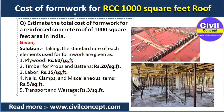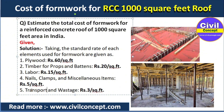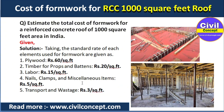For timber props and battens we pay 20 rupees per square feet. For labor we pay 15 rupees per square feet. For nails, clamps, and miscellaneous items we pay 5 rupees per square feet. For transport and wastage we pay 3 rupees per square feet. These are the standard data we will use to calculate the cost of formwork.